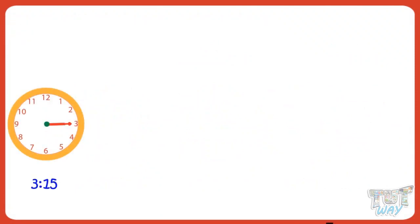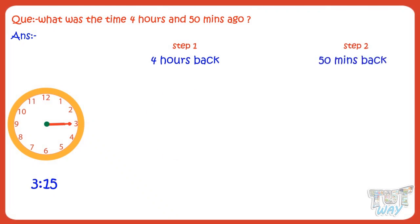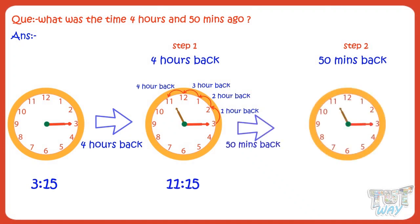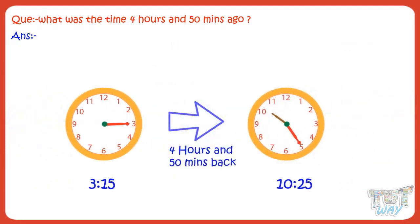If it is 3:15 on the clock, what was the time 4 hours and 50 minutes ago? For this, we will calculate the time in two steps. We will first calculate what was the time 4 hours back — hop back the hour hand 4 times and we will get 11:15. Now calculate what was the time 50 minutes back — hop back the minute hand 10 times, as 50 minutes pass when the minute hand moves 10 numbers back. So we get 10:25.